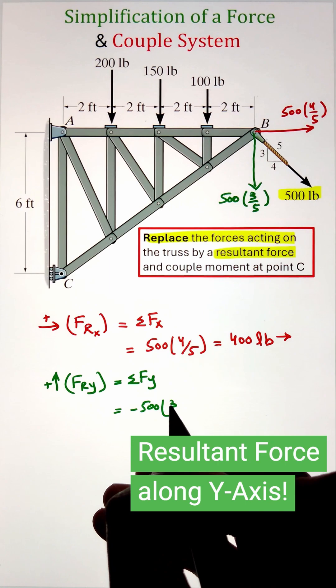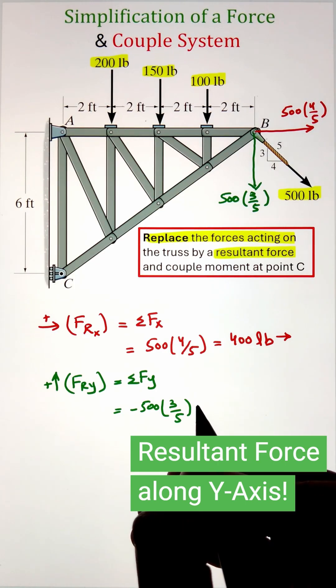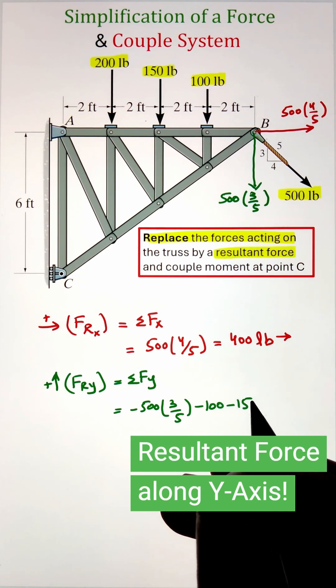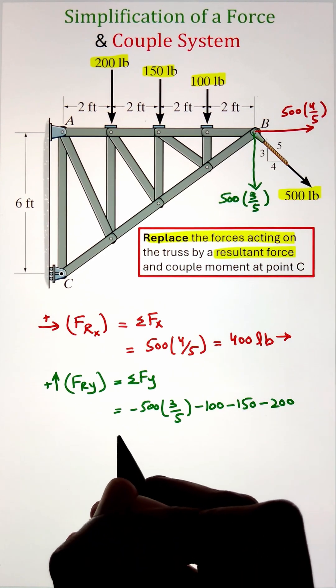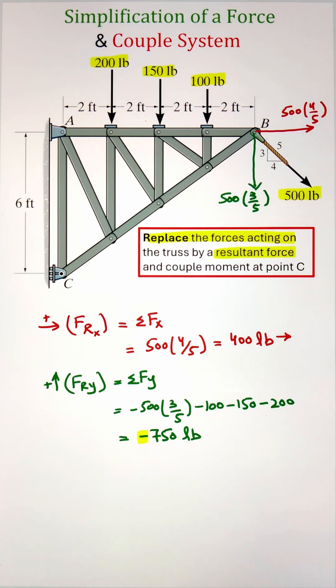Similarly, our 100 pound force, 150 pound force, and 200 pound force are all acting in the negative y direction. So adding them all together gives us the resultant force in the y direction as negative 750. The negative sign indicates it is acting downward.